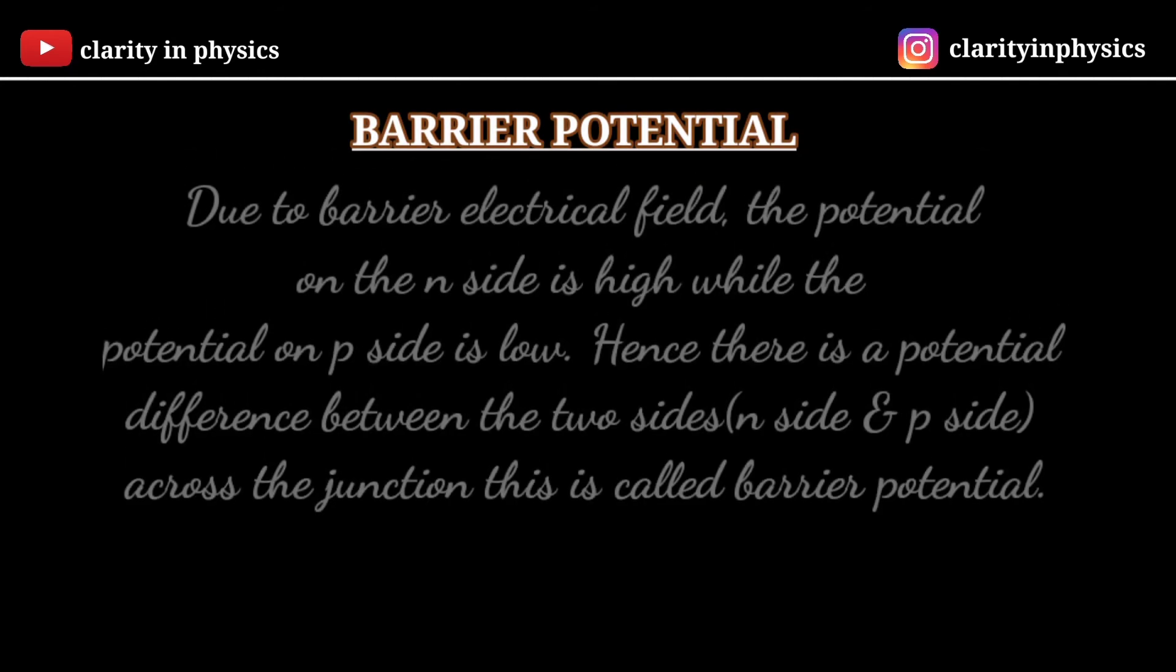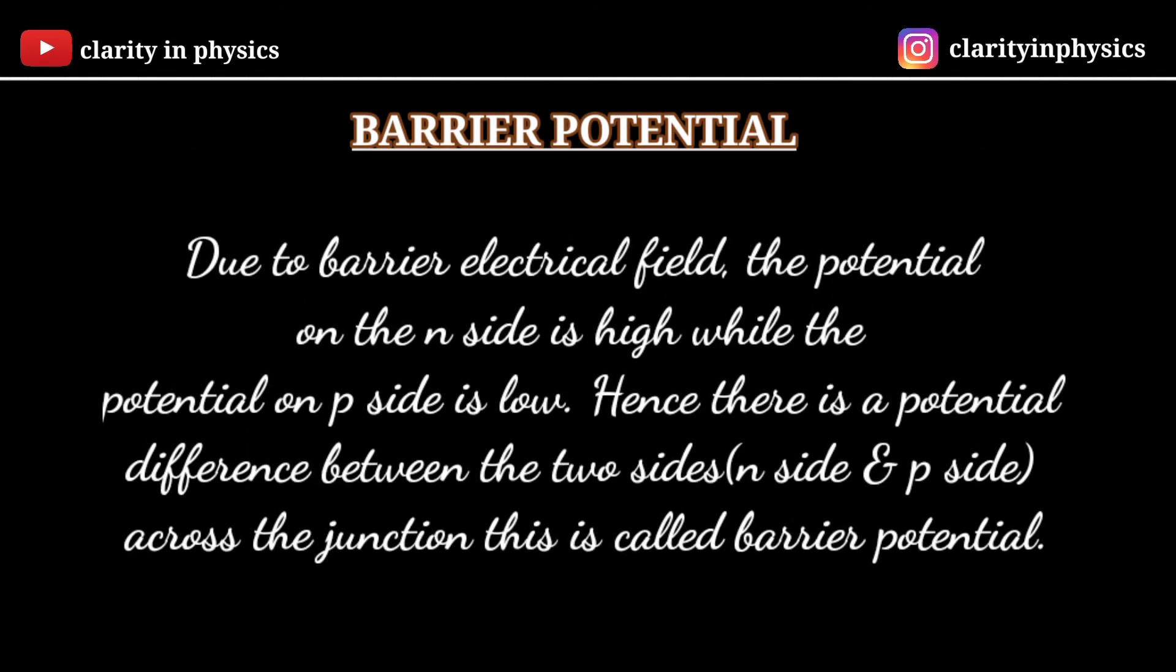Now let us talk about Barrier Potential. Due to the barrier electrical field, the potential on N-side is high while the potential on P-side is low. Hence, there is a potential difference between two sides across the junction. This is called Barrier Potential.